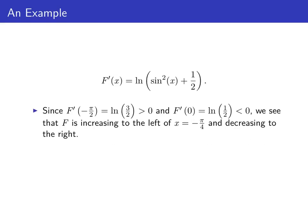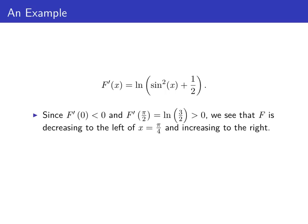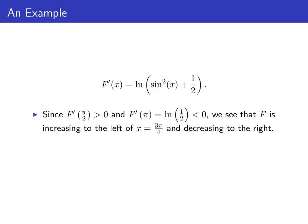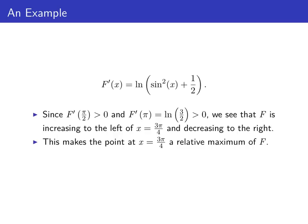To determine where F is increasing or decreasing, we check the sign of F' around each critical point. To the left of negative π/4, at negative π/2, F' is positive; to the right at zero, F' is negative. So F is increasing to the left and decreasing to the right of negative π/4, making it a relative maximum. Testing around π/4, F is decreasing to the left and increasing to the right, making it a relative minimum. Testing around 3π/4, F is increasing to the left and decreasing to the right, making it a relative maximum.